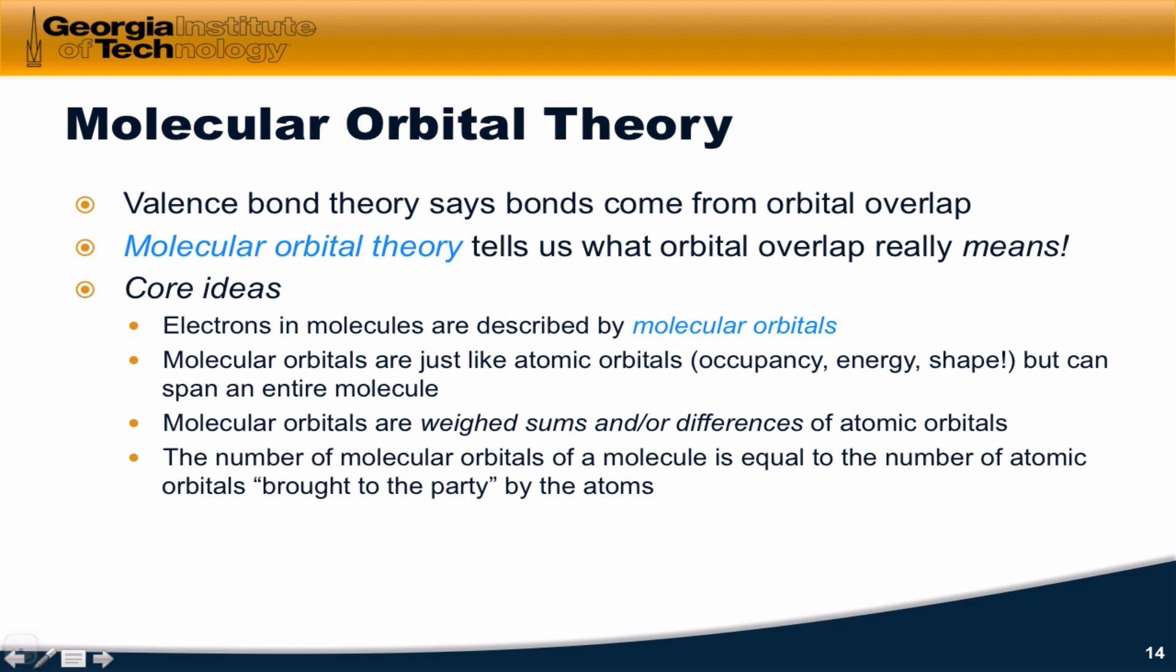The basic tenets are the following. Electrons in molecules are described by molecular orbitals, and these are psi's that are conceptually really identical to the atomic orbitals, except that they're allowed to extend over the entirety of a molecule. Molecular orbitals have the fundamental properties of atomic orbitals: occupancy, energy, and shape, but they can span an entire molecule.